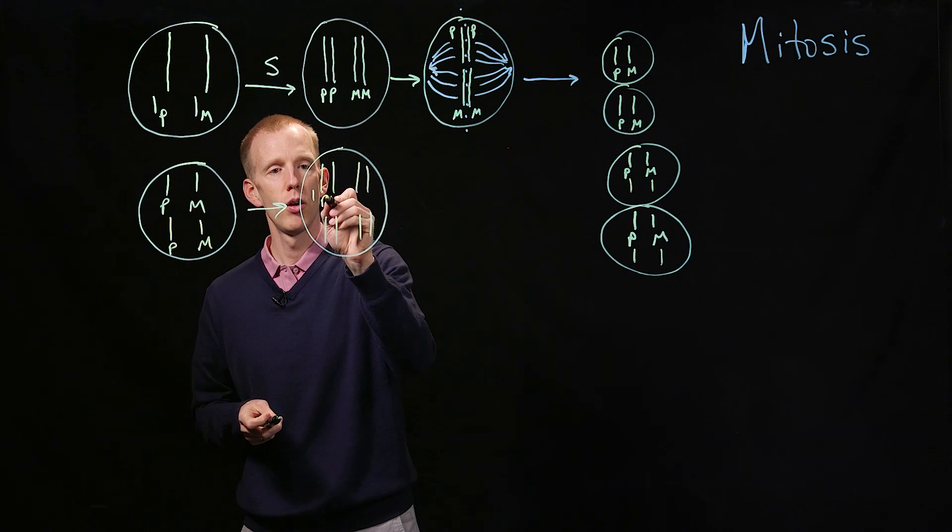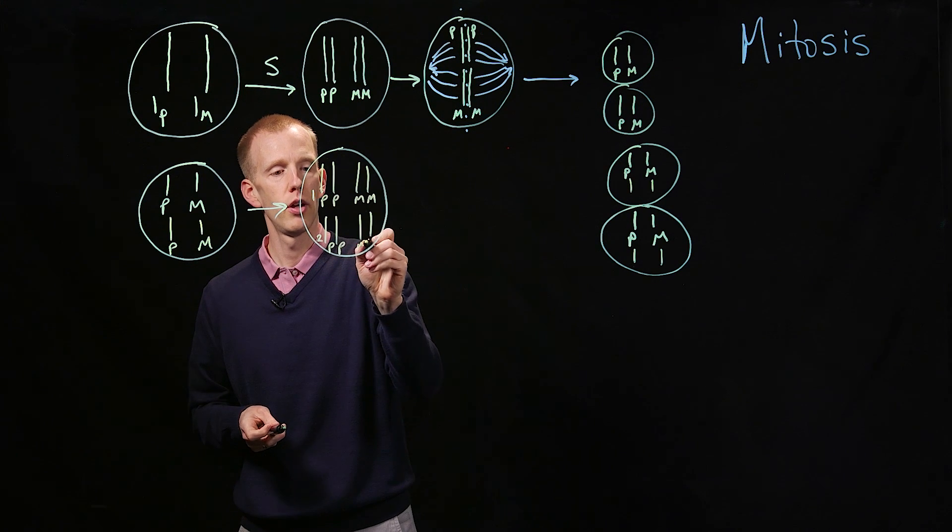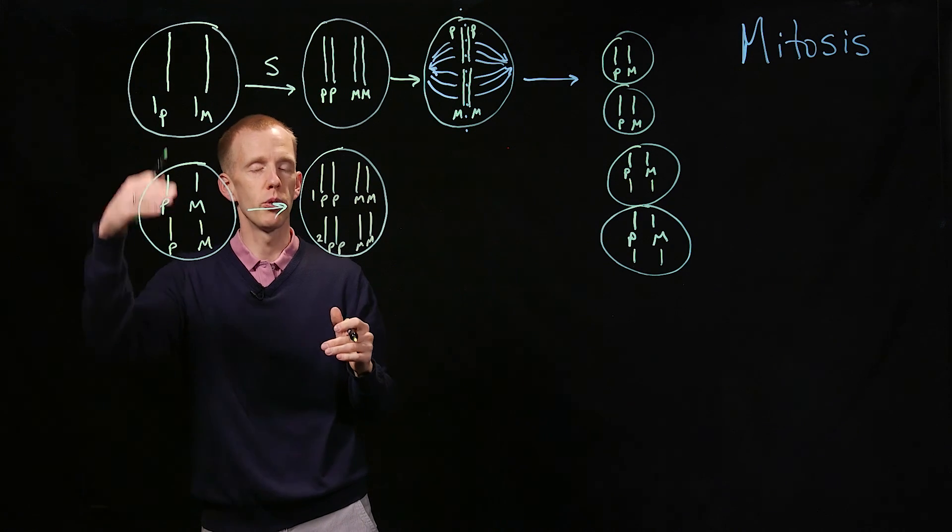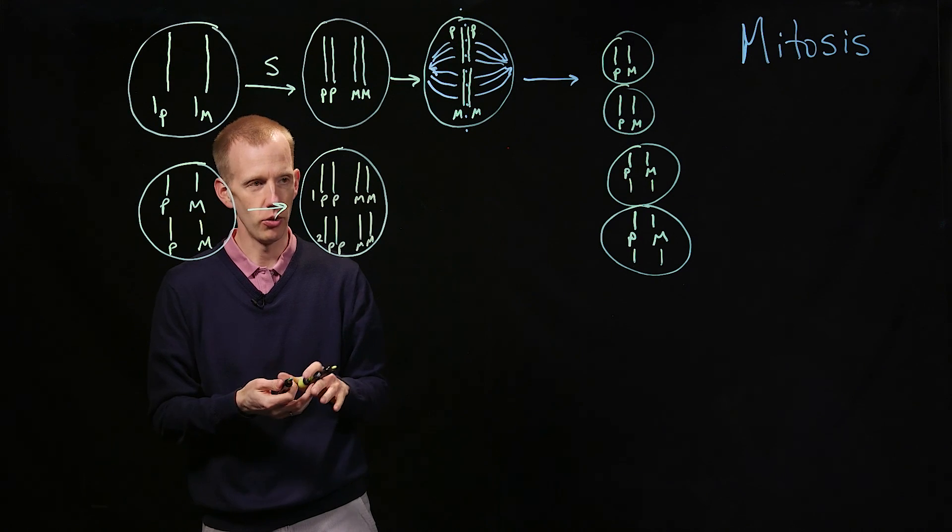So that's chromosome one, paternal, and chromosome two, paternal and maternal. So the big difference between what's drawn on top, one chromosome, and two chromosomes, is what happens here at metaphase during mitosis.